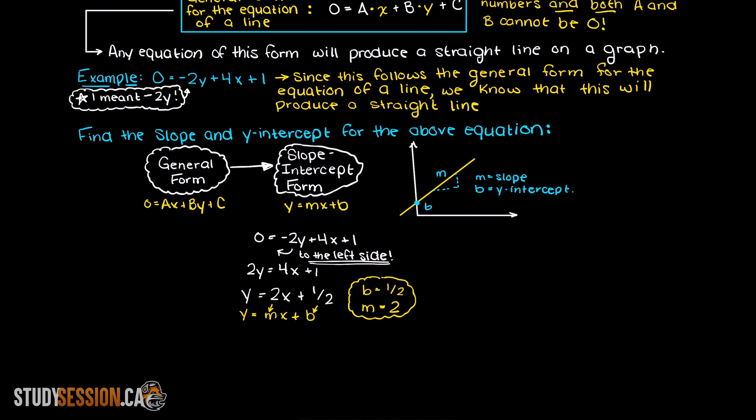So, as you can see here, our slope is going to equal negative 2 and our y-intercept is going to be negative 1/2.